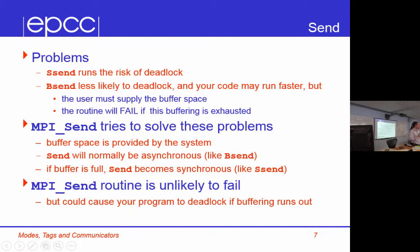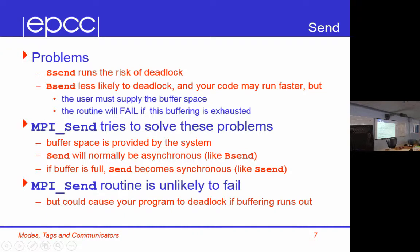A buffered send may run faster because it can return to user code much earlier — the transfer will happen at some point, and while the receiver isn't ready yet, a buffered send will return immediately and allow you to continue doing computation. Its disadvantage is that it will fail if you haven't got enough buffer space — you have to know your code well enough to predict the maximum buffer space needed at any point. Standard MPI_Send attempts to solve those disadvantages by combining the two mechanisms — buffer space is provided by the system. The trouble is you can't tell how much will actually be provided, but it can always fall back to using SSend mode internally.